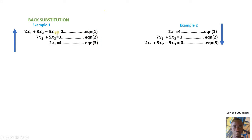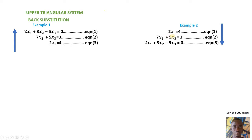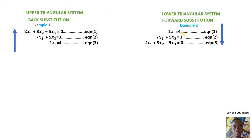Example 1 is in the form of a triangle called the upper triangular system. In example 2, to find S3 in equation 1, we divide both sides by 2. Whatever value we get for S3, we put that into equation 2 to find S2. When we get S2, we put S2 and S3 into equation 3 to find S1. So we do what is called forward substitution — we start from 1, move to 2, then to 3. Example 2 is in the form of a triangle called the lower triangular system.